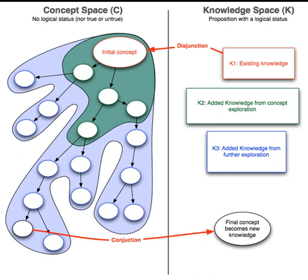The knowledge space is defined as a set of propositions with a logical statistical status, according to the knowledge available to the designer or the group of designers. The knowledge space describes all objects and truths that are established from the point of view of the designer. The K-space is expandable as new truths may appear in it as an effect of the design process. Conversely, the structure and properties of the K-space have a major influence on the process.